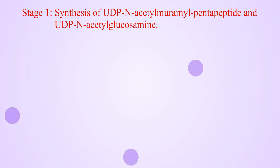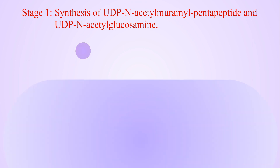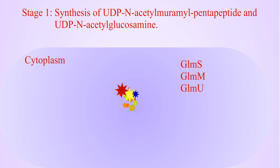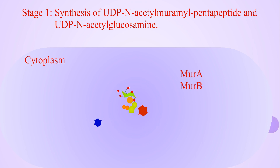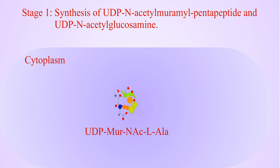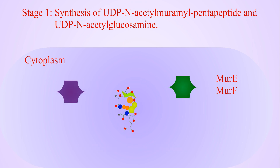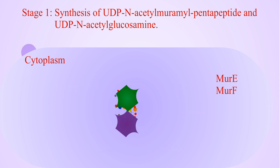Stage 1: Synthesis of UDP-N-acetyl-muramylpentapeptide and UDP-N-acetylglucosamine. Stage 1 occurs in the cytoplasm. In this stage, the nucleotide sugar-linked precursors, like UDP-N-acetyl-muramylpentapeptide and UDP-N-acetylglucosamine, occur as given in the following pathway.